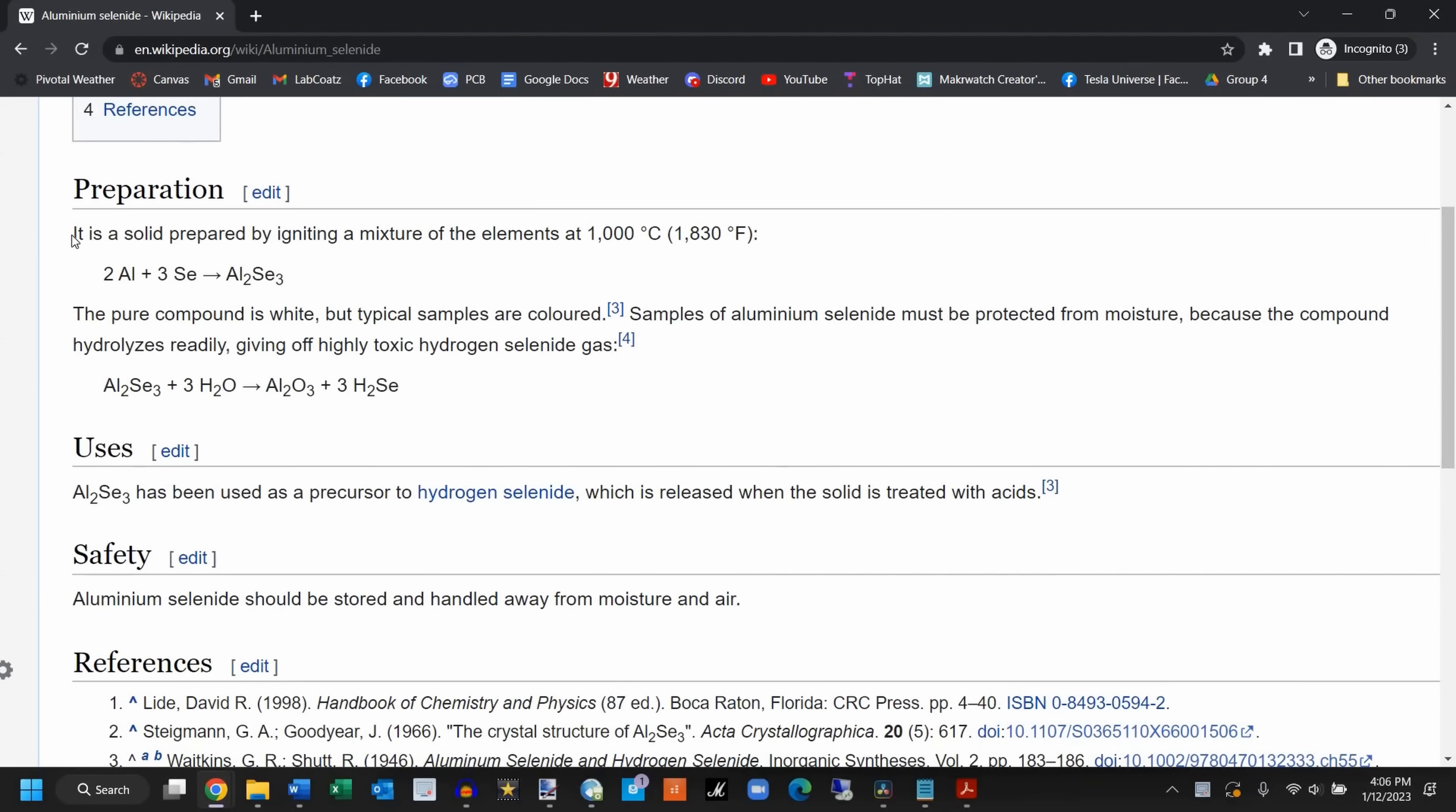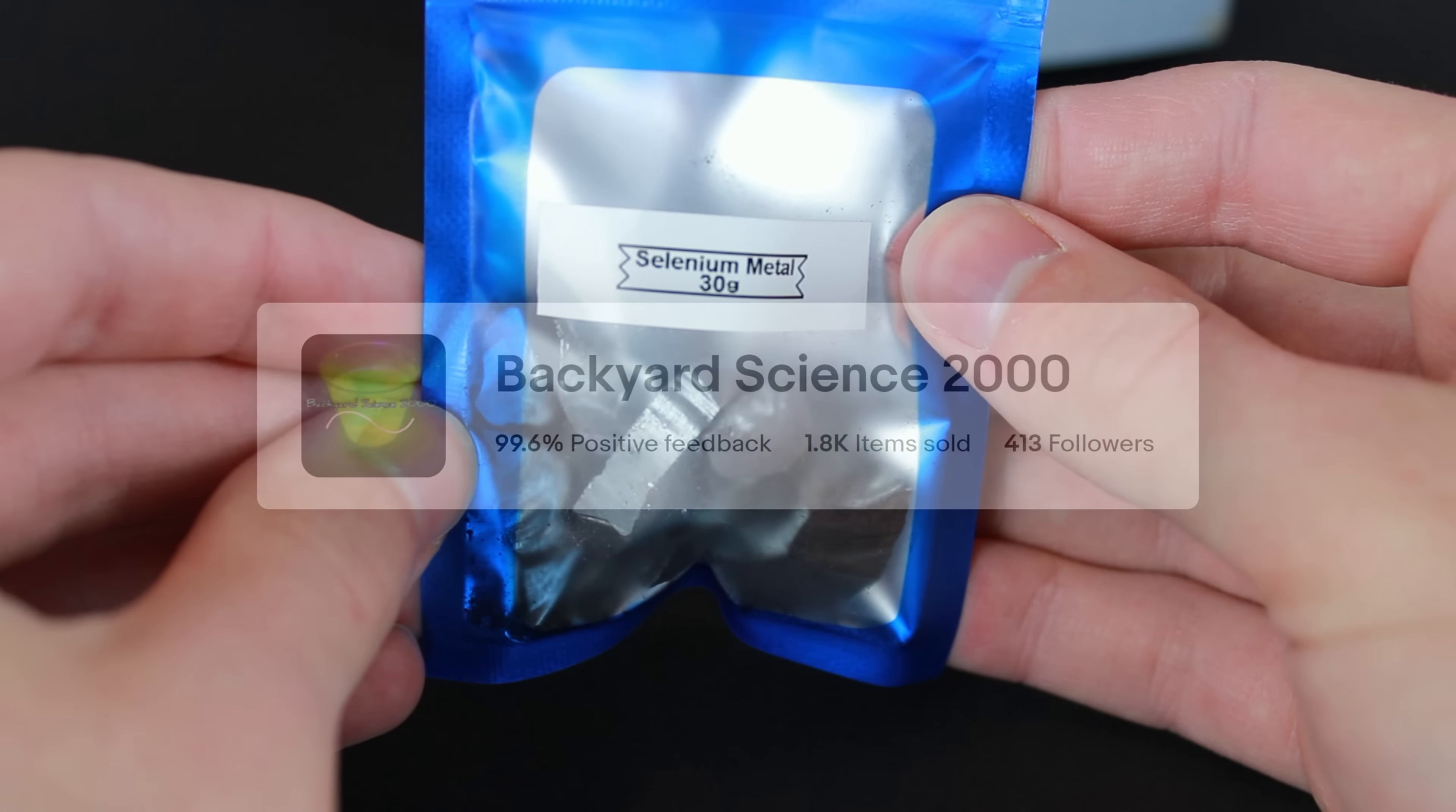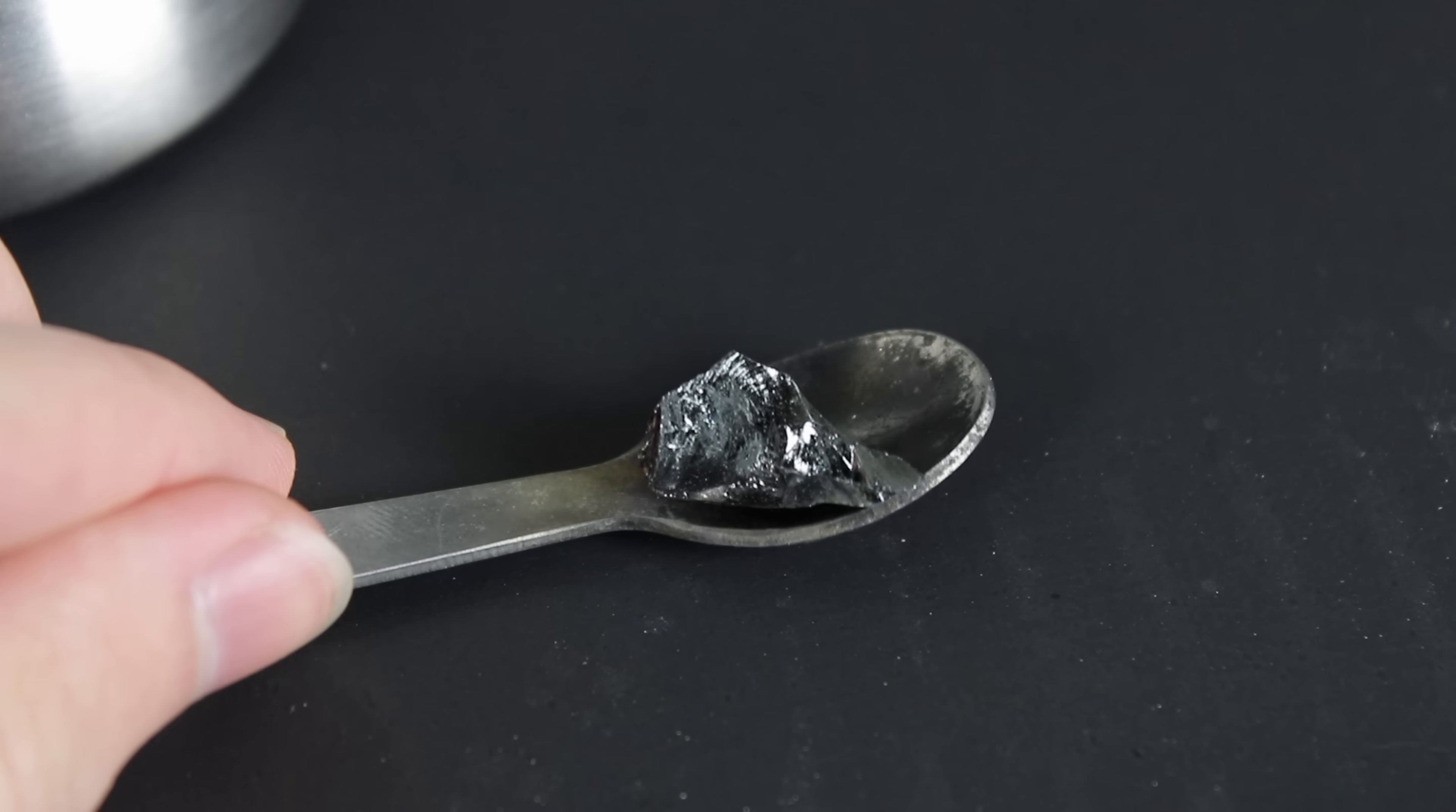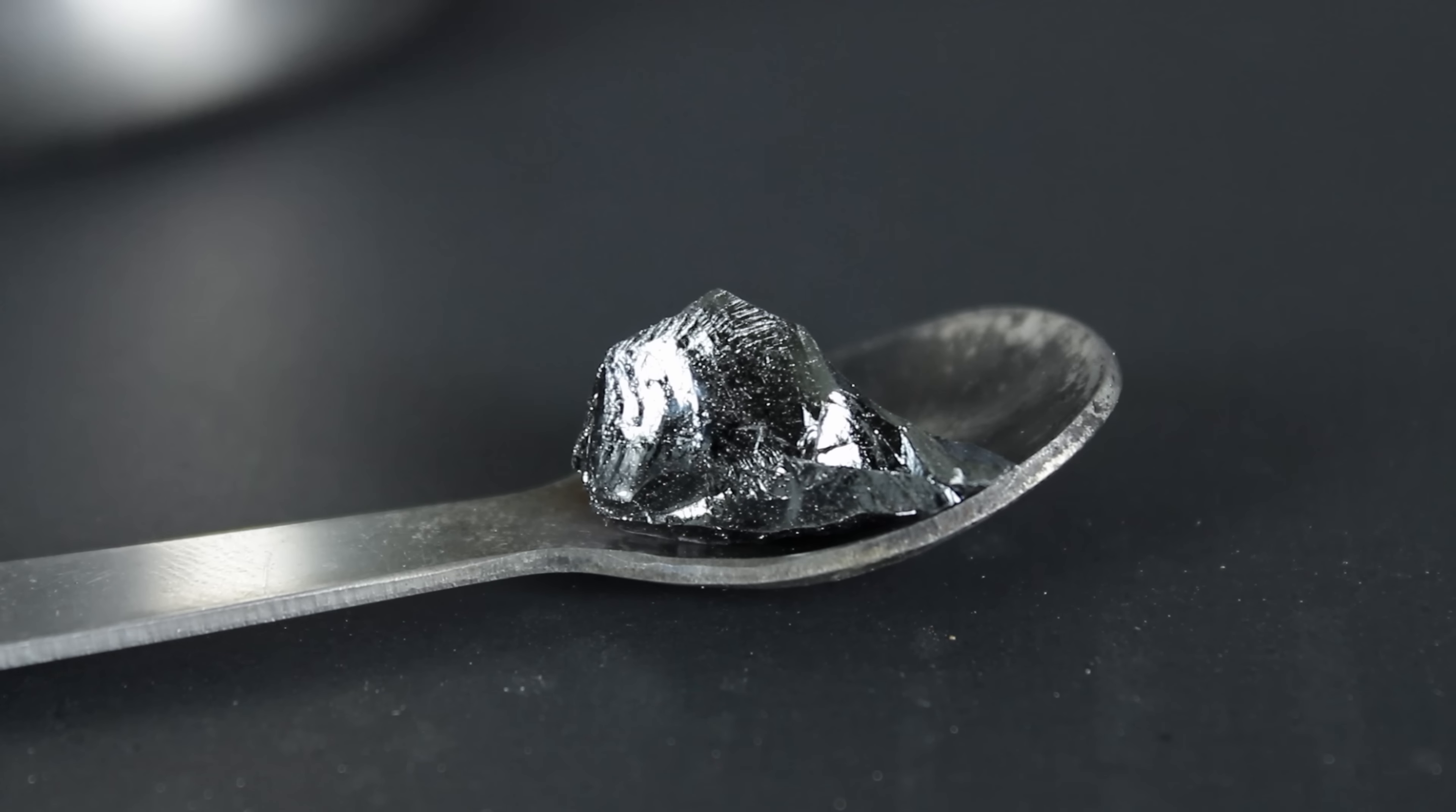To make the aluminum selenide, I really only needed two ingredients, aluminum powder and selenium. Fortunately, I recently had both of these reagents sponsored to me by Backyard Science 2000, who runs an eBay store that sells a ton of unique chemicals. This was one of the selenium chunks he sent me, and while it looks quite stunning, it had to be completely crushed up before I could use it.